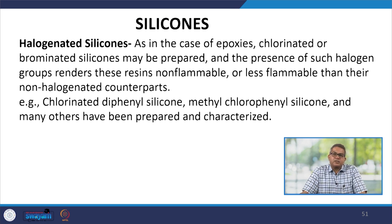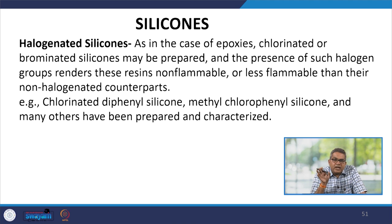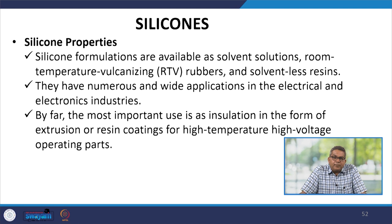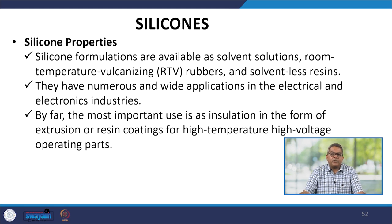Halogenated silicones: as in the case of epoxies, chlorinated or brominated silicones may be prepared. The presence of halogen groups renders these resins non-flammable or less flammable than their non-halogenated counterparts. Examples include chlorinated diphenyl silicone, methyl chlorophenyl silicone and many others that have been prepared and characterized. Silicone formulations are available as solvent solutions, room-temperature vulcanizing (RTV) rubbers and solventless resins, with numerous applications in electrical and electronics industries. The most important use is insulation in the form of extrusion or resin coating for high-temperature, high-voltage operating parts.